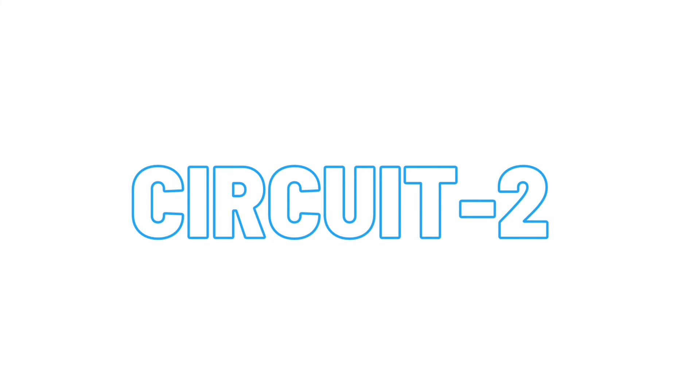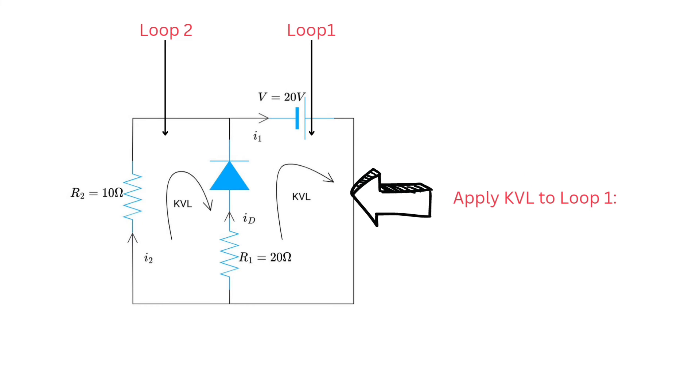Now this is circuit two. These are two loops and we will get two KVL equations from these two loops.